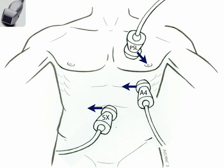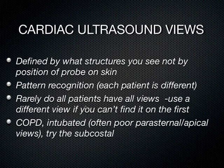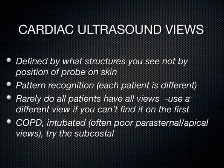Moving to the heart: the three main transducer positions are the parasternal long (indicator toward the patient's left hip), the apical 4-chamber (indicator to the patient's right), and the sub-xiphoid view (indicator to the patient's right). Cardiac views are defined by the structures seen on screen. There is significant art involved — everyone has a different chest wall shape, and patients with COPD or expanded lung fields often have poor parasternal or apical windows, making the sub-xiphoid view very important.